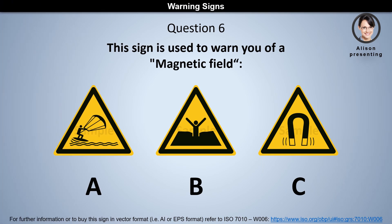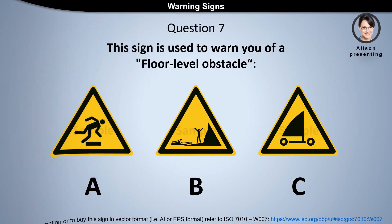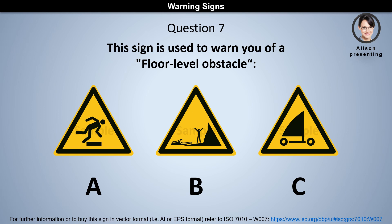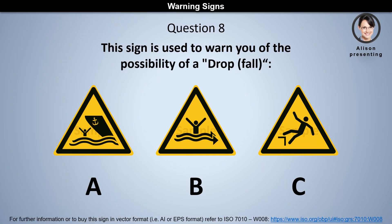to warn you of non-ionizing radiation. Is it a, b, or c? The answer is c. Question 7: This sign is used to warn you of a floor level obstacle. Is it a, b, or c? The answer is a.